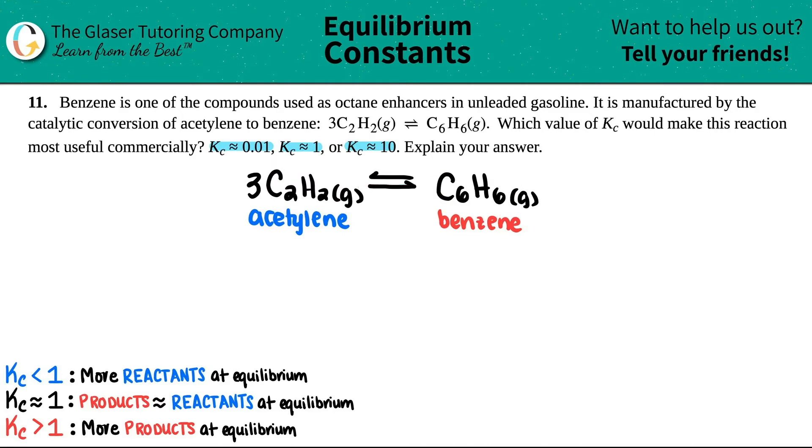Now, if we read the first part of the question, it says benzene is one of the compounds used as octane enhancers in unleaded gasoline. So that's a good thing. That means the want of benzene is great. We want benzene. That's what's used as the octane enhancer in the unleaded gasoline. So when we manufacture benzene, we would want the product.